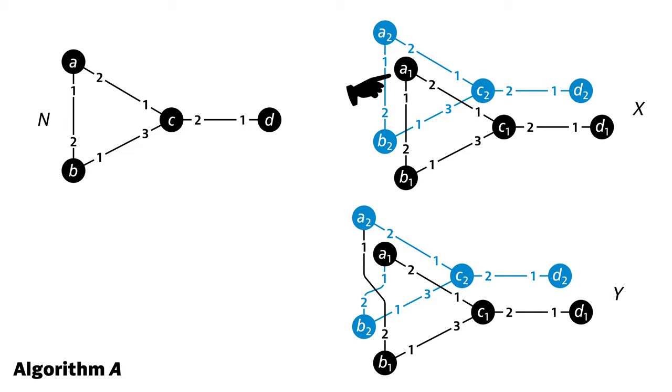Formally, what you saw here is an example of covering maps. In this case, there is a covering map from X to N, and also a covering map from Y to N. And we can show that whenever there is a covering map between two networks, then no matter which algorithm you run, the node and its image will be in the same state after each round. The proof is basically what you already saw in this video.